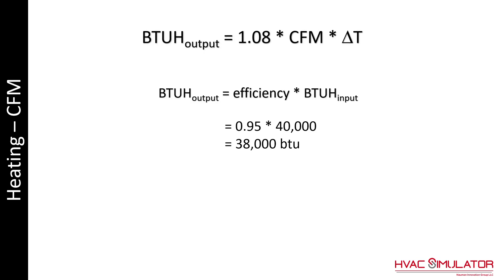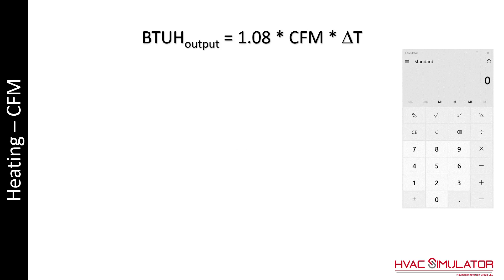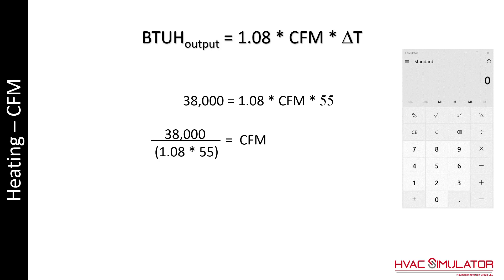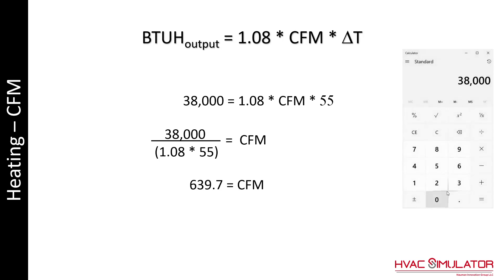Calculate the BTU output by multiplying the BTUs by the efficiency. 0.95 times 40,000 is 38,000 BTUs. Substitute into the sensible heat equation and solve, which gives 639.7. On the calculator: 38,000 divided by 1.08, then divided by 55.